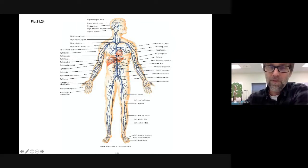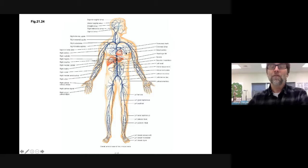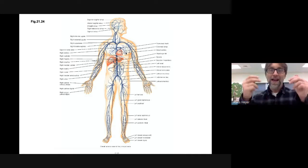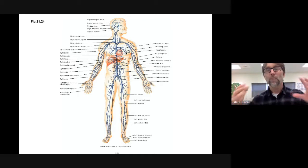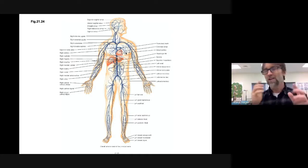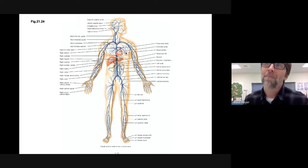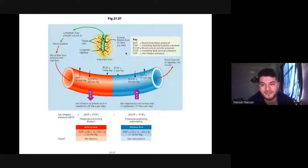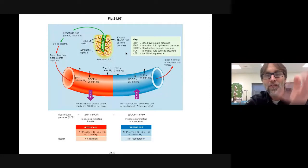On the other side of the heart, if the left side fails, the backup goes into the lungs. The pulmonary veins back up, then the pulmonary capillaries, and water starts leaking into the lungs from excess pressure. You'd hear sounds at the lower lobes — the upper lobes would sound clearer. That's a sign of left-sided congestive heart failure. In both cases, swelling results from too much filtration and not enough reabsorption.